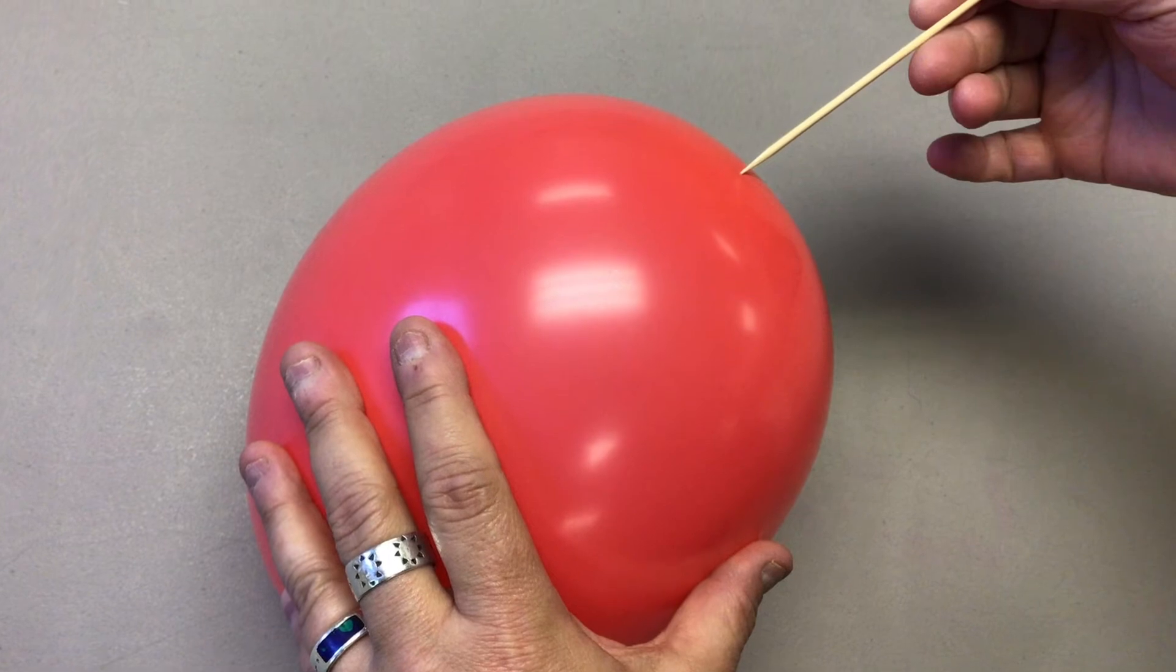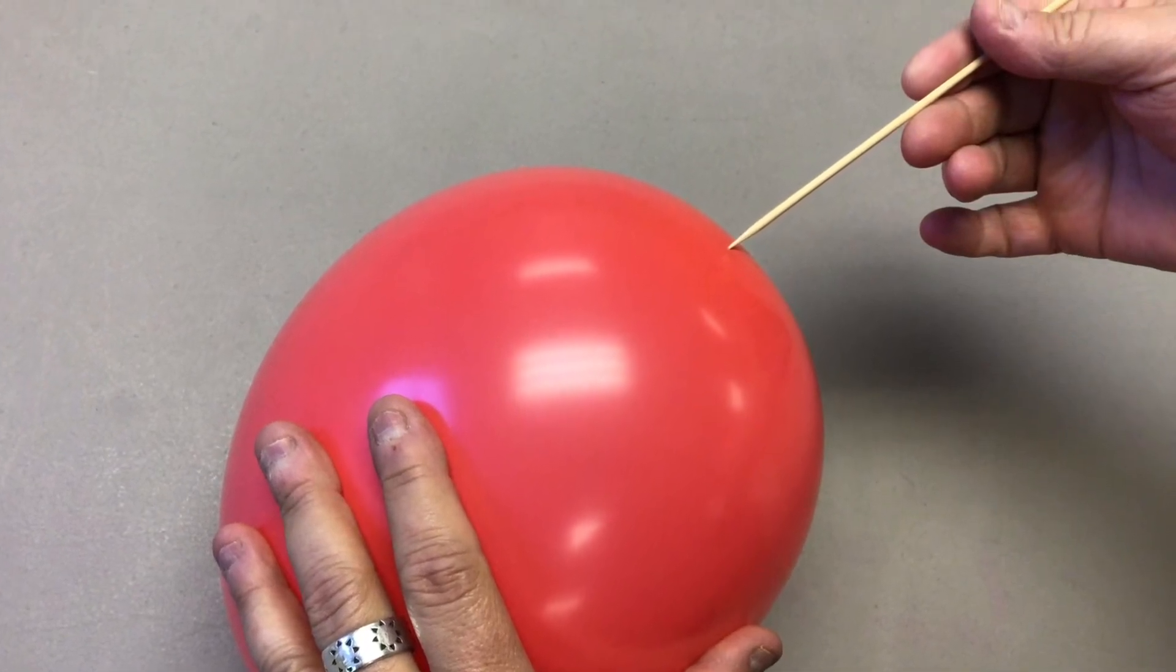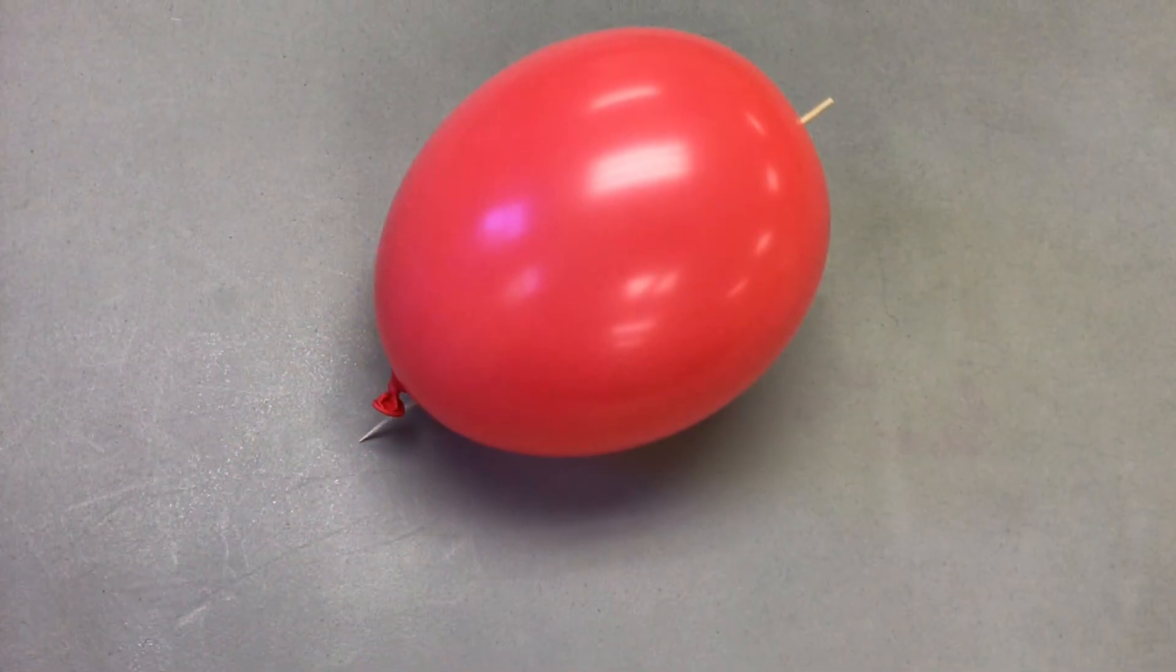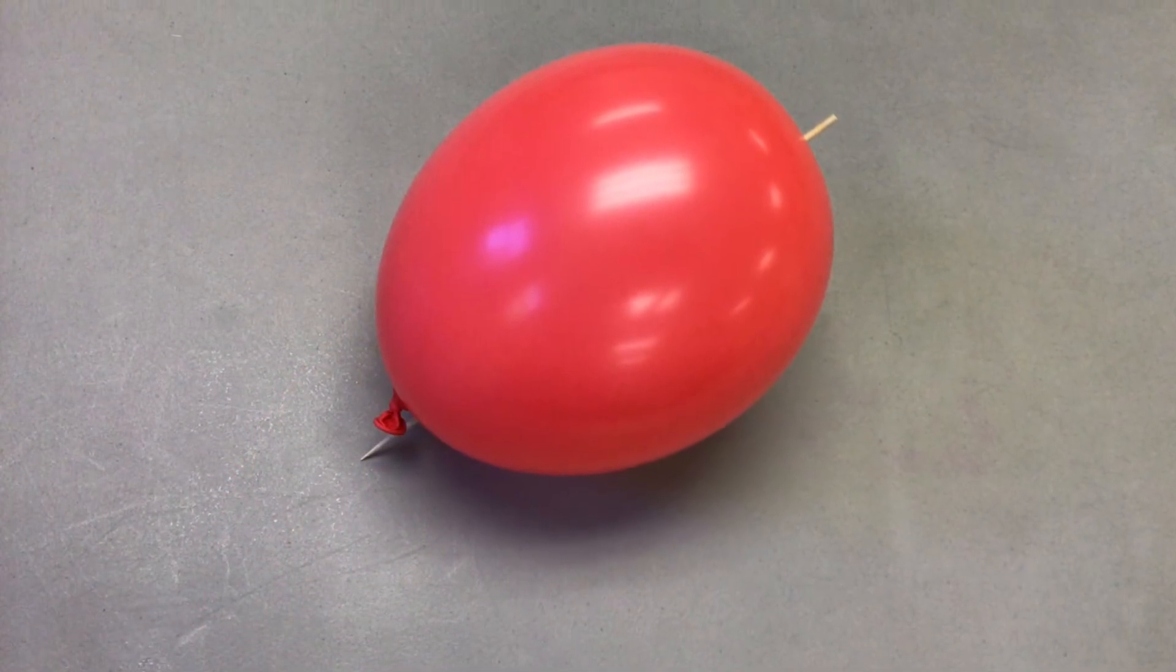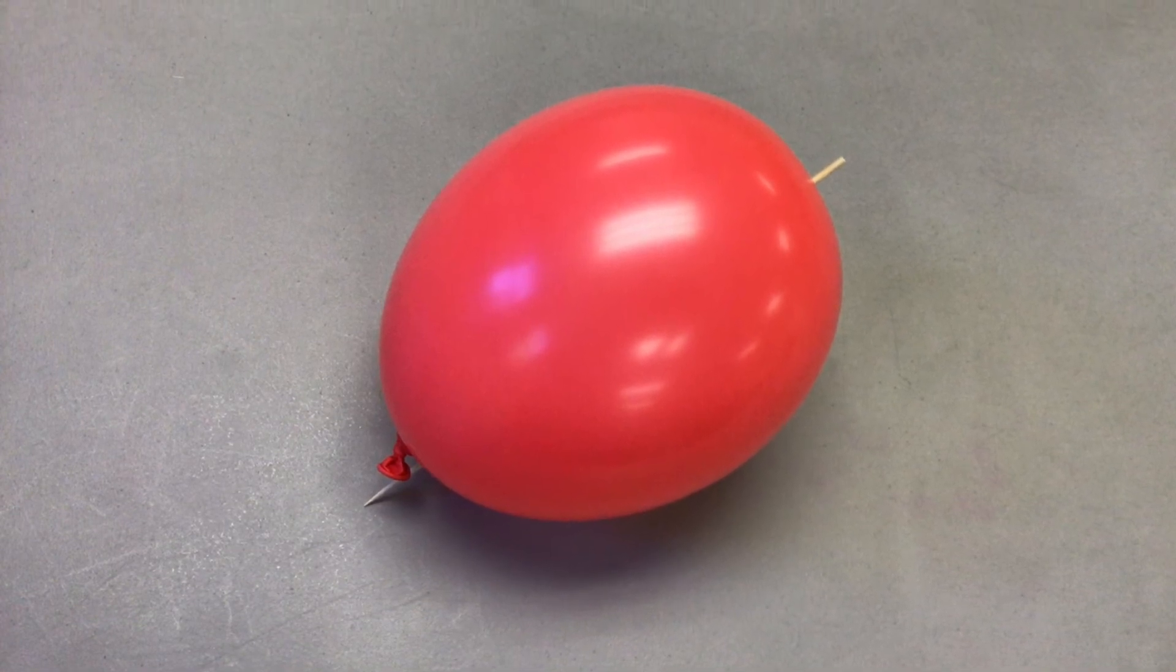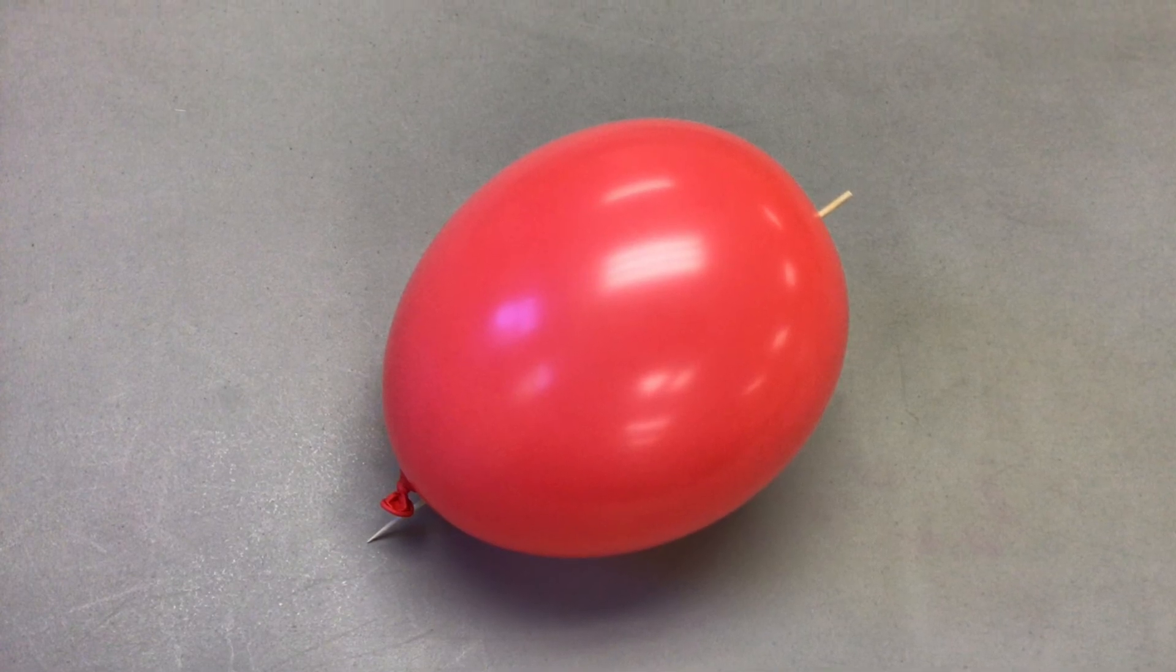Here's the science. When you blow up the balloon about halfway, you'll notice that the latex on the ends of the balloon, the top and the bottom by the stem, are thicker. When you go to put the skewer through the balloon, make sure that you put the skewer through those thicker parts of the balloon where the latex is not as thin.